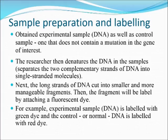In sample preparation and labelling, firstly we need to obtain an experimental sample as well as a control sample. Then the researcher denatures the DNA in the samples. The long strands of DNA are cut into smaller and more manageable fragments. The fragments are then labelled by attaching a fluorescent dye — for example, the experimental DNA is labelled with green dye and the control DNA sample is labelled with red dye.